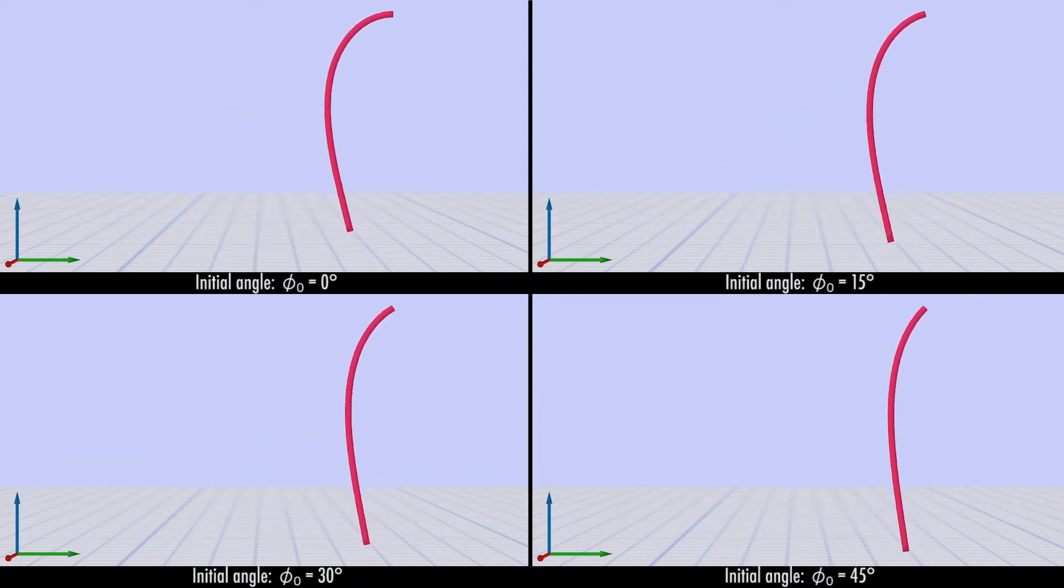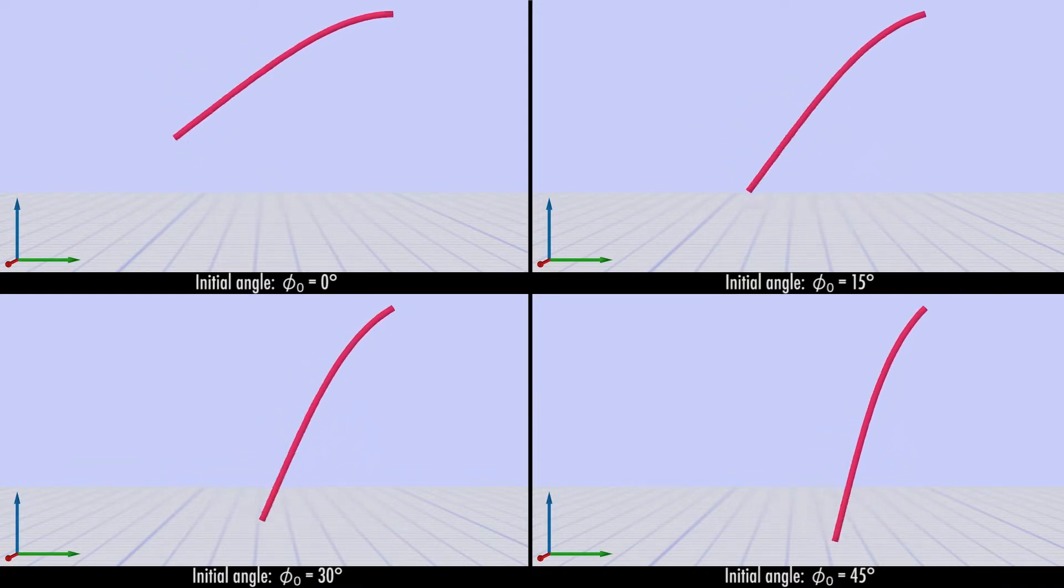Here we illustrate the temporal evolution of initially straight rods with different initial orientations bending under gravity.